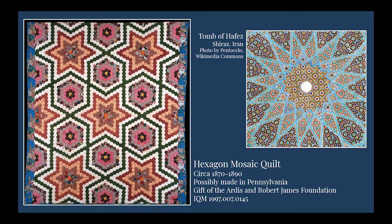This quilt's pattern of hexagons resembles some of the simpler designs seen in mosque tile work across the Middle East. Hexagon mosaic patterns were first used in English and American quilts in the late 1700s, and gained new popularity after 1850, possibly in connection with the Aesthetics Movement. In addition to its pattern, this quilt also uses two prints that feature exotic birds — a bird of paradise and the ever-popular peacock.